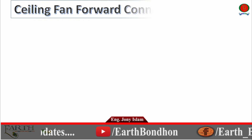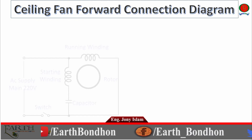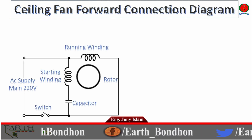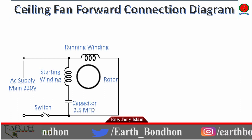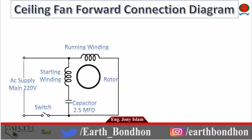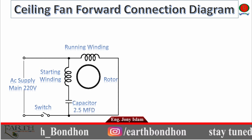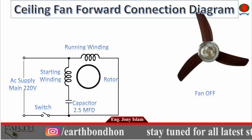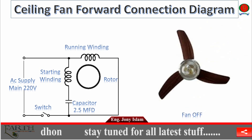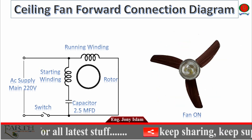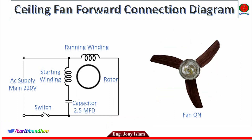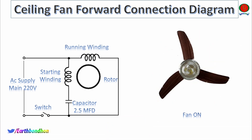Ceiling Fan Forward Connection Diagram. Capacitor: 2.5 Microfarad, 220 Volts. Ceiling Fan Off. Ceiling Fan Off — Ceiling Fan On. Ceiling Fan Forward Running.